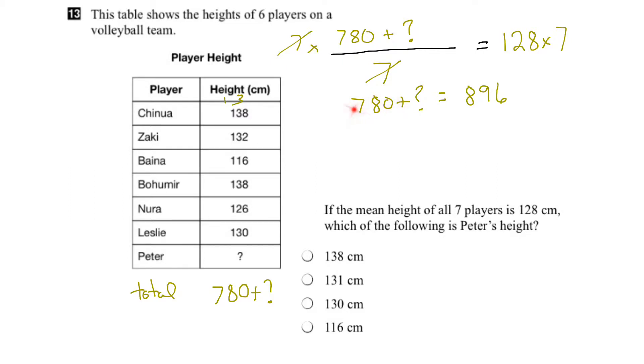Now we've got to get rid of the 780. To do that we can subtract 780 from both sides. So 780 minus 780 plus the question mark equals 896 minus 780. The 780's cancel, so the question mark equals 116, and our units are centimeters.